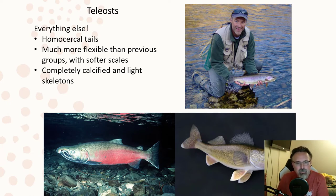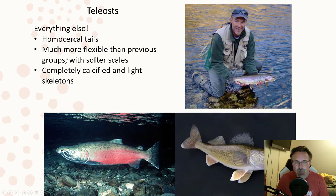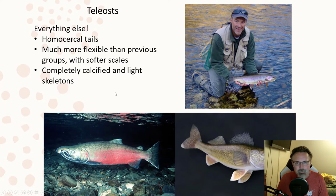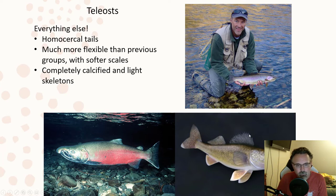The last ray-fin group, the teleosts, basically includes everything else — there are just so many types it would take an hour to list them all. They all have homocercal tails where the top and bottom lobes are symmetrical. They're a lot more flexible than the other fishes, their scales are very soft with little external armor, and their internal bone is completely calcified and very light, allowing for high maneuverability and speed. If you see a fish and call it a teleost, you're almost always going to be right. You can see the distinctive bony rays in the dorsal fin — that's where the name actinopterygians comes from.